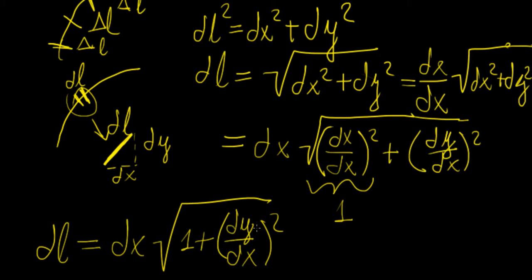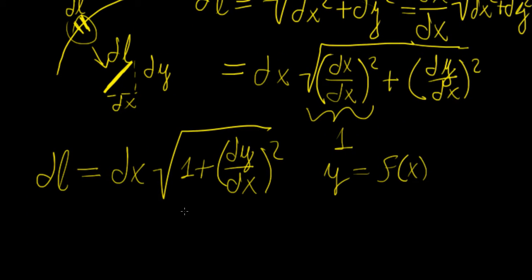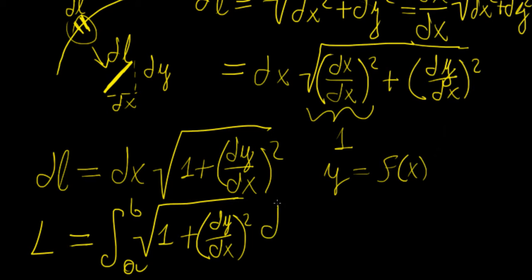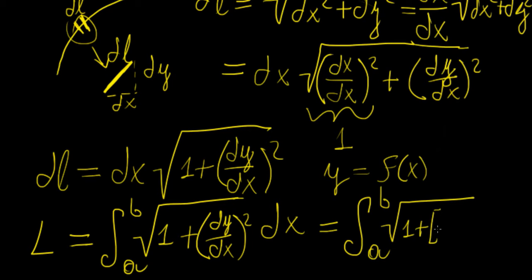This works out because our function is defined by y, so y equals f of x, which is the function for which we're finding the arc length. From this definition, our arc length L equals the integral from a to b of the square root of 1 plus dy over dx squared times dx, or equivalently the integral from a to b of the square root of 1 plus f-prime of x squared times dx. That's our arc length formula.